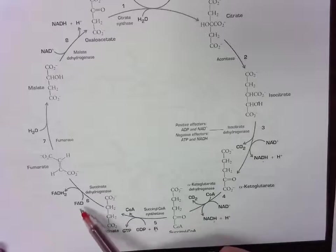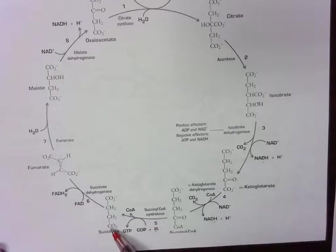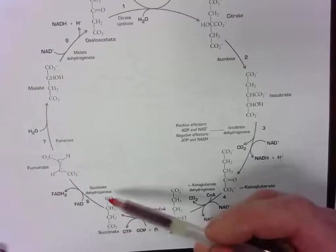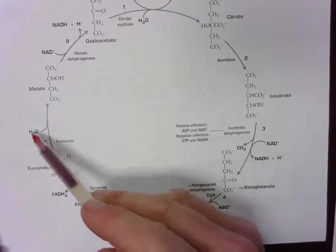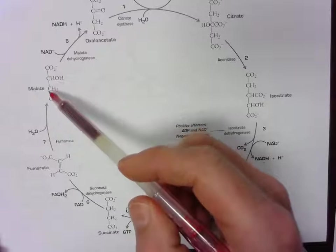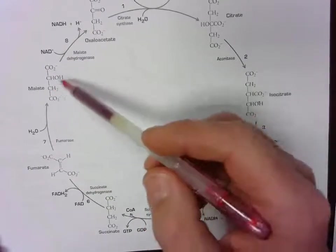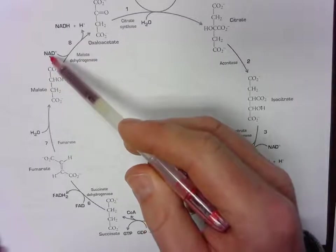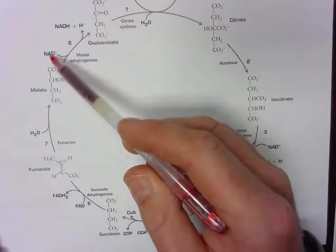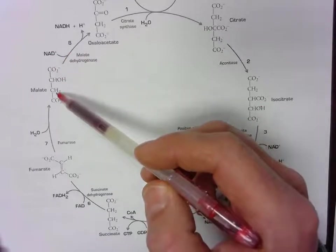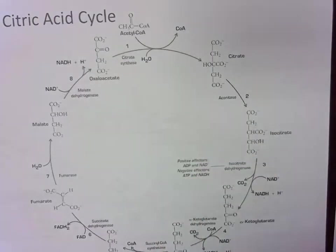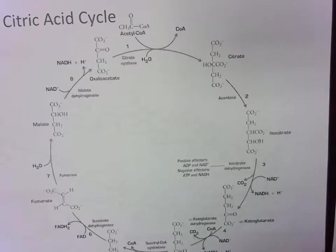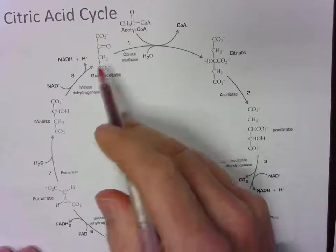In step six, FAD is getting reduced to FADH2. That must mean succinate is getting oxidized to fumarate. So we end up with, in step six, two FADH2s. In step seven, water is being added to fumarate and converting it into malate. So this would be a hydration reaction. And then NAD plus is getting, in the next step, step eight, NAD plus will be getting reduced. Malate will be getting oxidized to form oxaloacetate. So again, we get two additional NADHs from step eight.